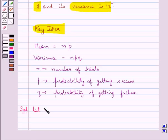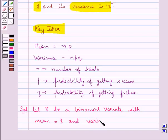Let X be a binomial variate with mean equal to 8 and variance equal to 12.